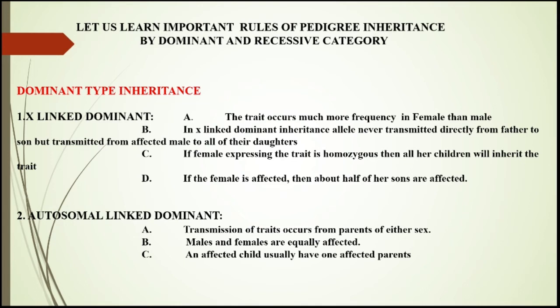Second is autosomal dominant. Transmission of trait occurs from parents of either sex — male to male transfer (father to son) can happen, and mother to mother transfer can happen. Males and females are equally affected. An affected child usually has one affected parent — either one parent is affected in autosomal dominant.